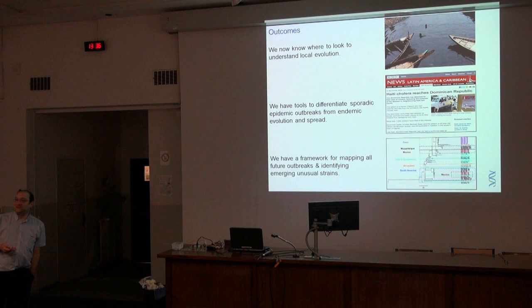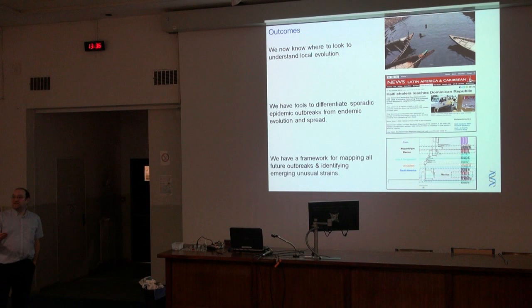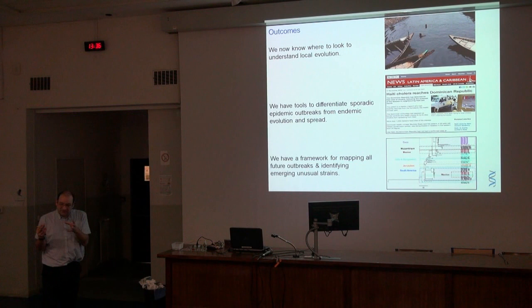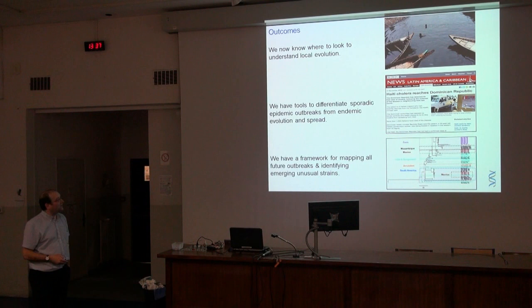What this allows us to do is understand the local evolution of cholera — we know where to look. It's happening in the Bay of Bengal, and that's where we need to be sampling and investigating to understand what pressures are driving it. We've now got tools that allow us to differentiate sporadic epidemic outbreaks from genomic evolution. Using fine-scale genetic analysis, we can build accurate transmission maps, and when there are future outbreaks, given the background context we already have, we can rapidly say where a strain has come from.